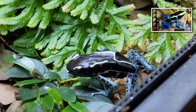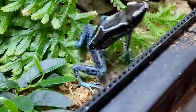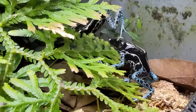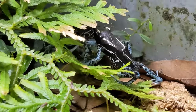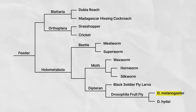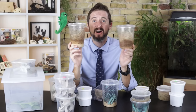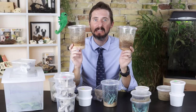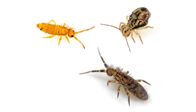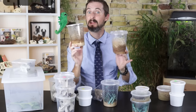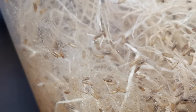Fruit flies are an absolute must if you keep poison dart frogs, but are a great option for really any animal that requires very small feeders. It's usually the adults that are used as feeders, and a couple of different species are available based on the size you need. If you need something smaller than fruit flies, you probably want springtails, which are hexapods like insects but aren't actually part of the insect clade.